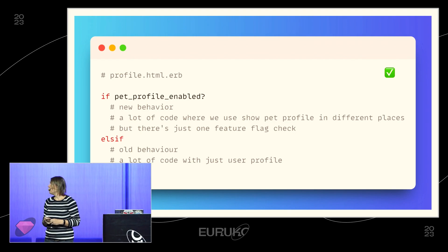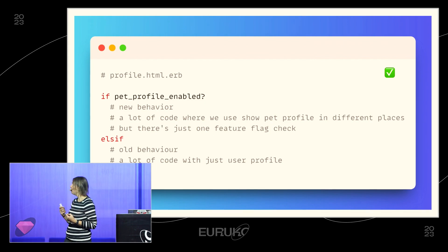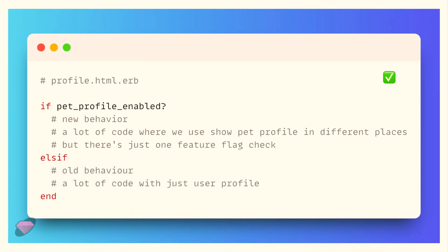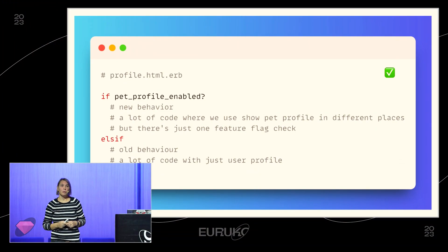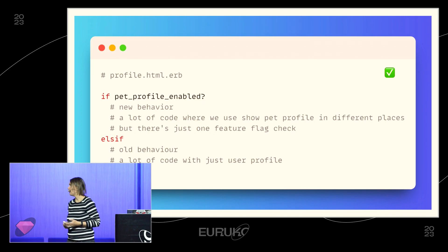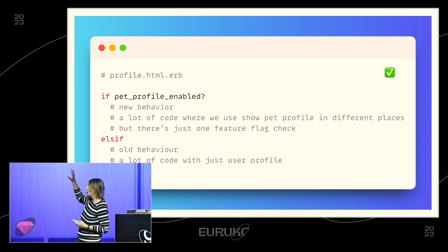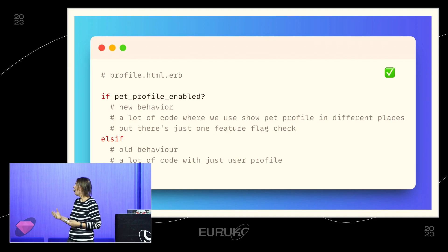You also often have feature flags in views. If the feature is enabled or not, we show the profile differently. If you have a long view and want to add pet information to many different parts, you could do if-else branches throughout — it works, but it's error-prone and hard to read. Instead, you can duplicate the view for a while: have one branch with the new behavior and one with the old. This is also easier when removing the feature flag — you know to keep just the first branch and delete the second.